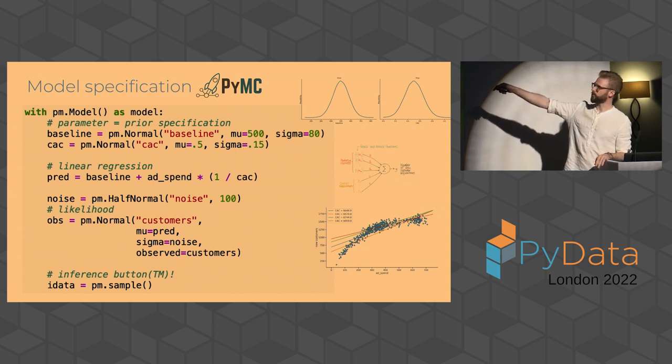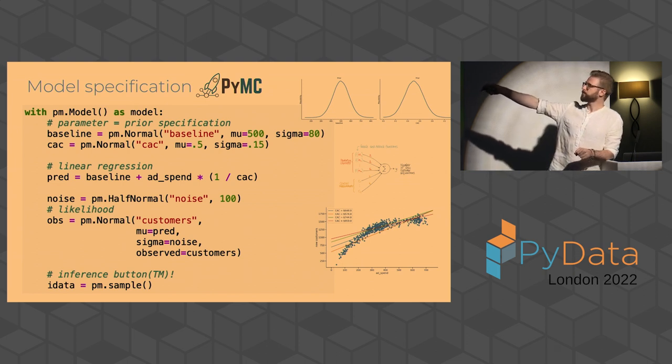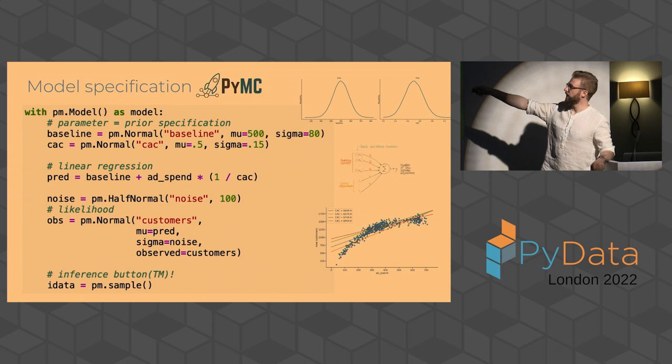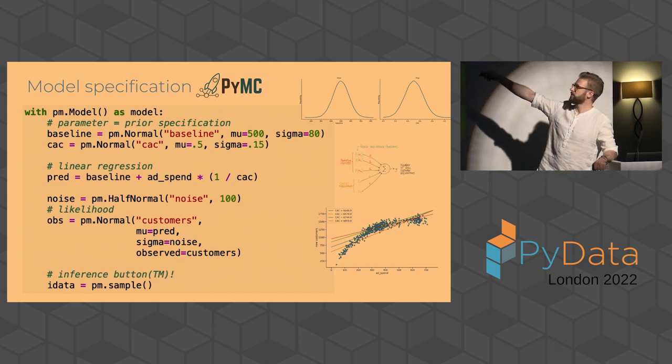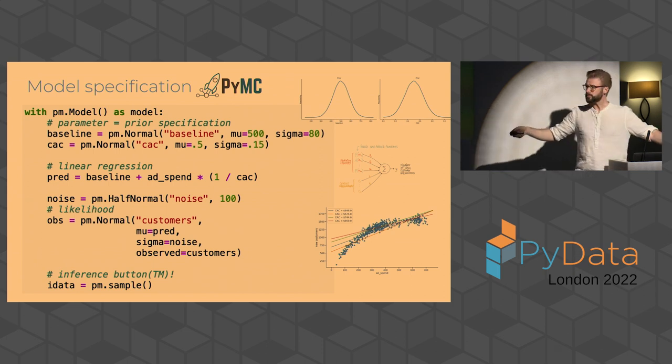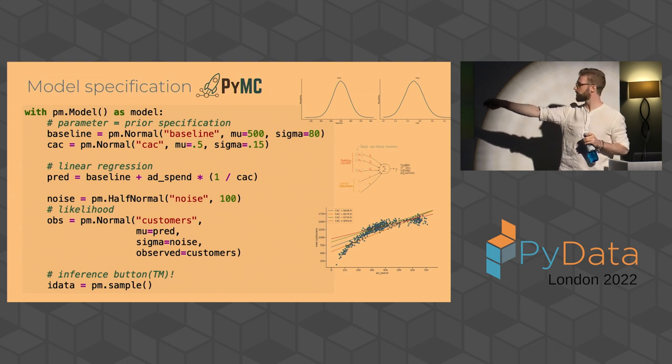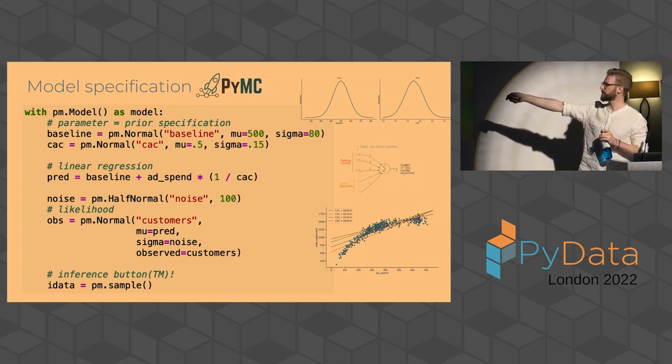So the first line is just boilerplate. We're setting up a new model with PyMC. And the first two lines are the parameters of the model. Really, so far, it's just a linear regression model. So it has an intercept, which I call baseline. And it has the slope, which is the CAC. But I don't just specify these parameters. I also assign priors to them. So the plausible space that I just mentioned before. And the first, this is a normal distribution that I'm going to assign here. And I give it a name. I give it a mean and a standard deviation. And this just basically incorporates my knowledge without having seen any data.